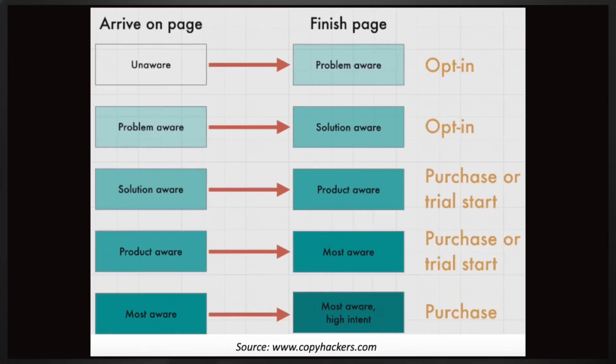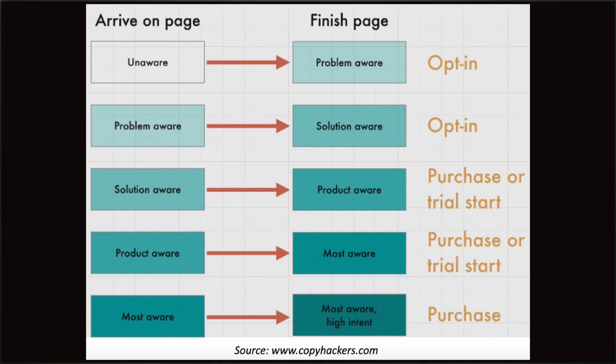So how can you leverage these five concepts in your own funnels? If some people arrive on your page at the unaware stage, your job is to make them problem aware, and you can do this with a good opt-in. If they're problem aware, bump them up to solution aware — this is actually the best place to use an opt-in, and any lead magnet that solves a burning problem is going to be a huge winner here, just make sure it's short. If they're solution aware, bump them up to product aware, and this is where you can start seeing purchases or, if you have a SaaS business, sign-ups. You always want to get them to their most aware, highest intent stage, because this is where the purchase happens.